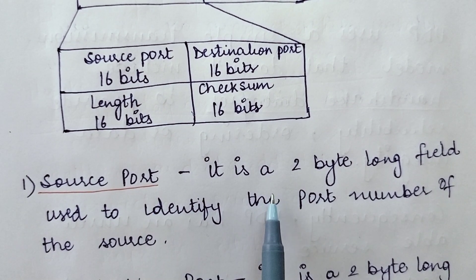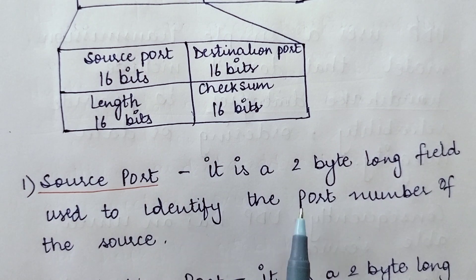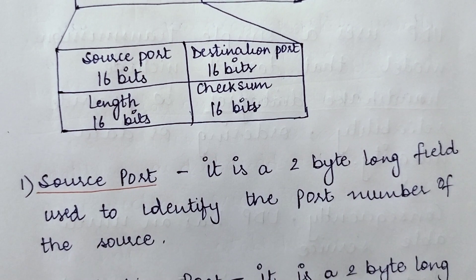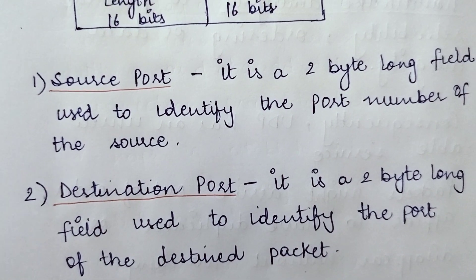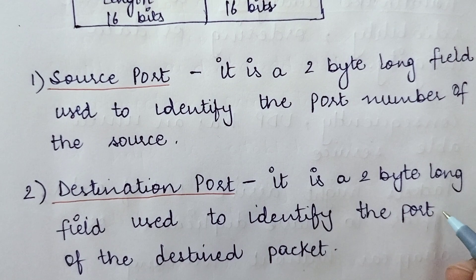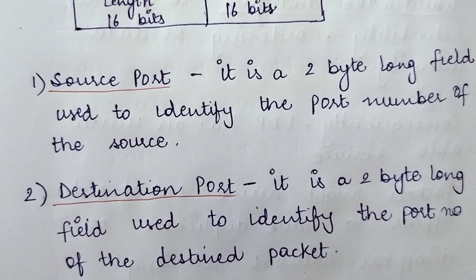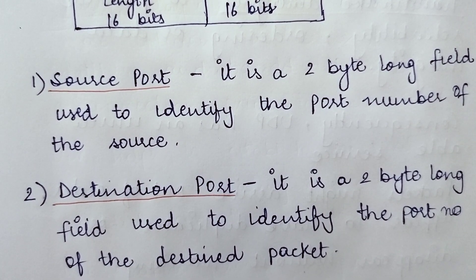The source port is a two-byte long field used to identify the port number of the source that wants to transmit the data. Similarly, the destination port is again a two-byte long field used to identify the port number of the destination — that is, for which particular host the packet is destined. This field identifies the port number of that particular destination.